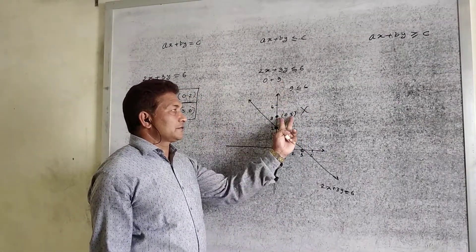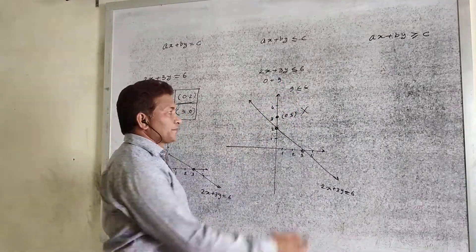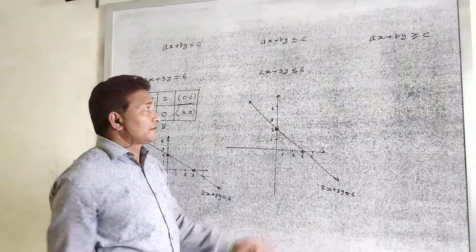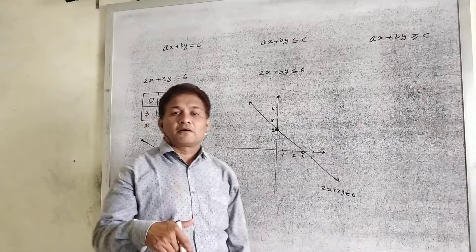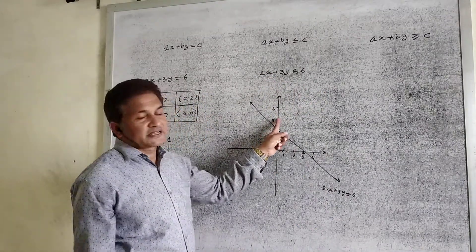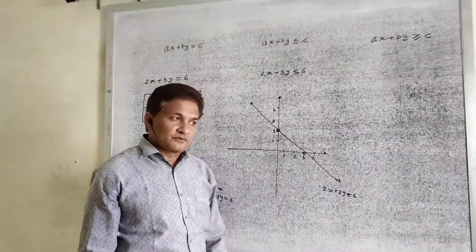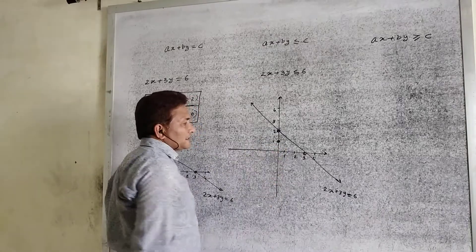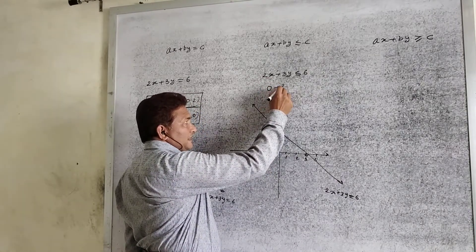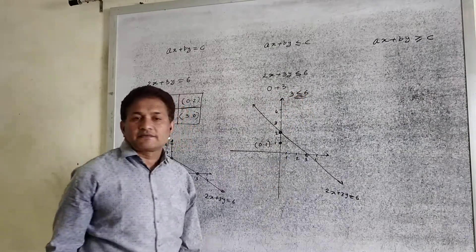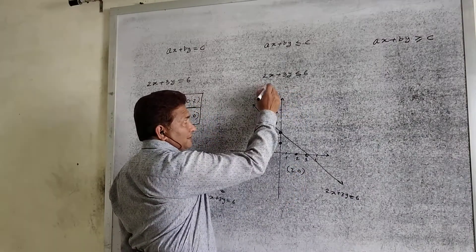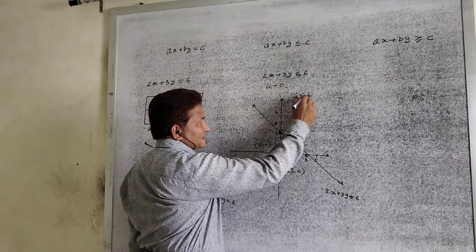Since the point (0, 3) does not satisfy the given condition, it does not represent the solution. Consider another point (0, 1). Put this value: x equal to 0, y equal to 1, we get 3 less than 6 — it satisfies the given condition. Next consider the point (2, 0). Put this value: x equal to 2 gives 4, y equal to 0 gives 0. So we have 4 less than 6 — it satisfies the condition.